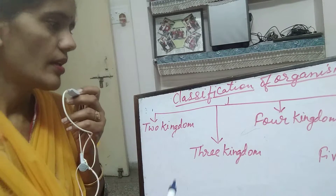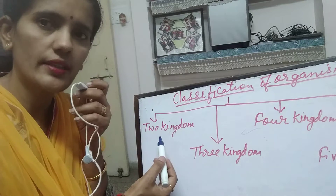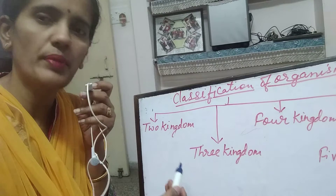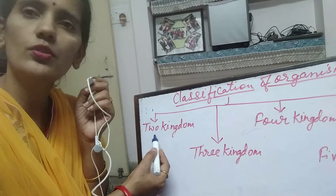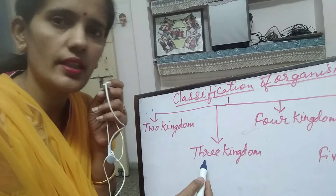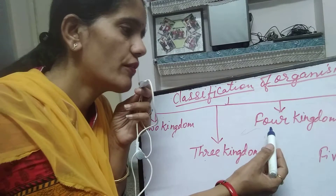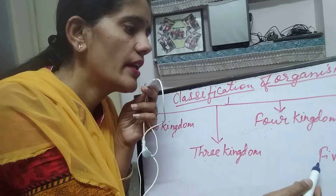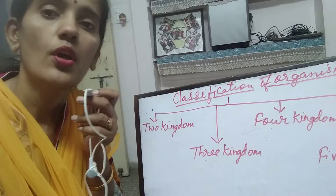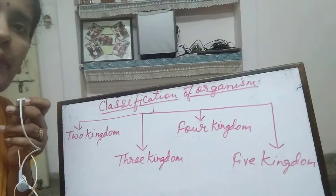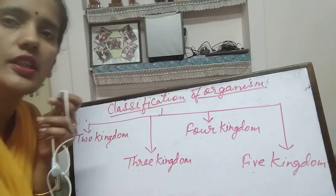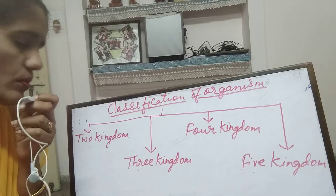Classification of organisms was done in different ways in different periods. Firstly it was two kingdom classification, next three kingdom classification, four kingdom classification, and lastly five kingdom classification, which we study. Normally we are studying five kingdom classification.